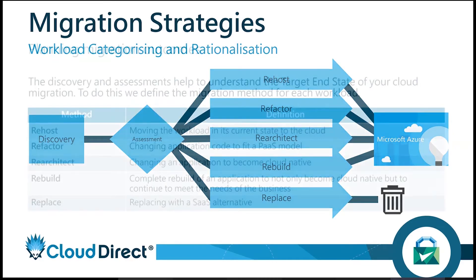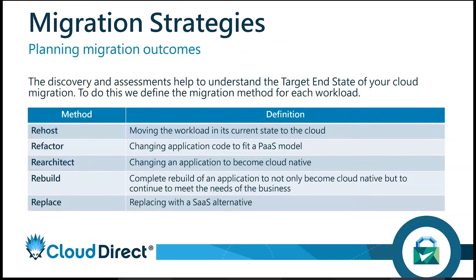Now a bit of an explanation about the different Five R's, just making sure we have a common vocabulary. Re-hosting — maybe you've heard of lift and shift — it's moving the workload in its current state to the cloud. There's minimal reconfiguration; there's always going to be some element of re-IPing, DNS changes, stripping out agents and things like that, but there's minimal effort for the workloads to operate in their current state in Azure.